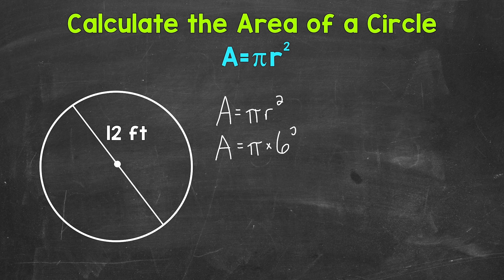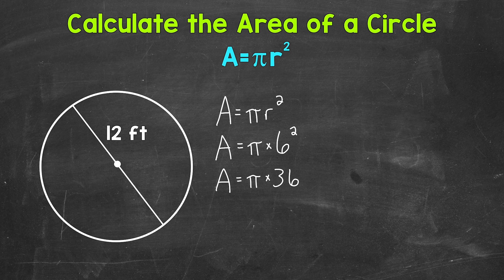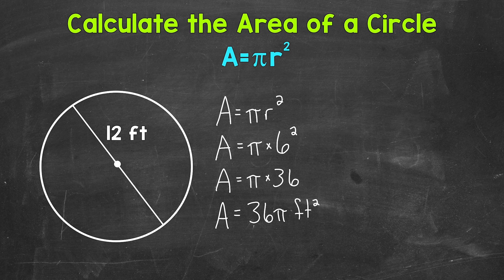Plugging that in gives us 6 squared. Now 6 squared means 6 times 6, not 6 times 2 — when we square a number, we multiply that number by itself. So 6 squared equals 36, and we end up with pi times 36. Just like in our first example, one way to write our area is in terms of pi: 36 pi square feet.